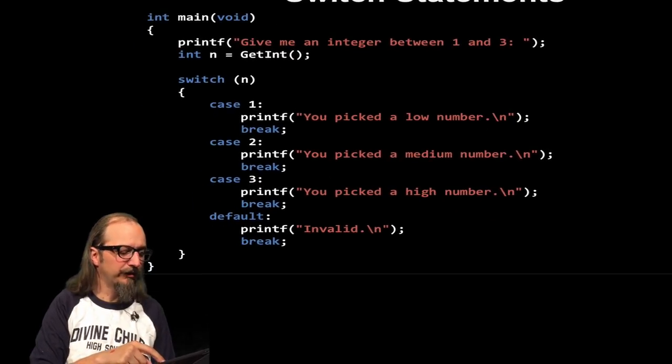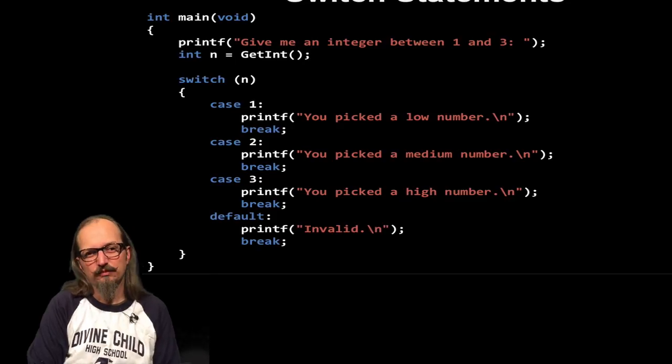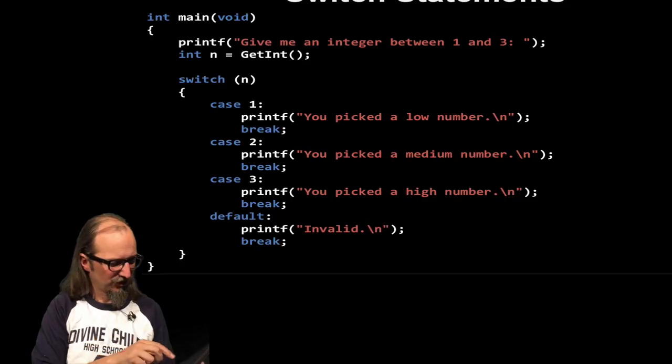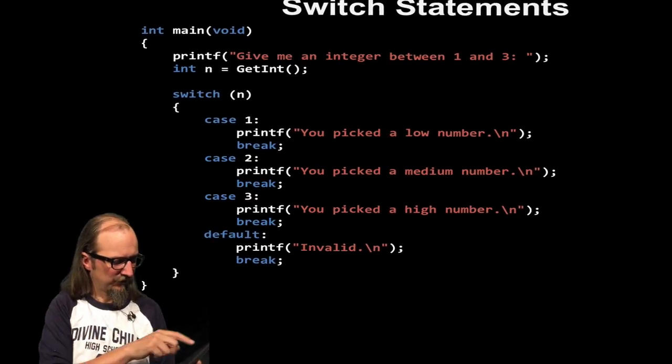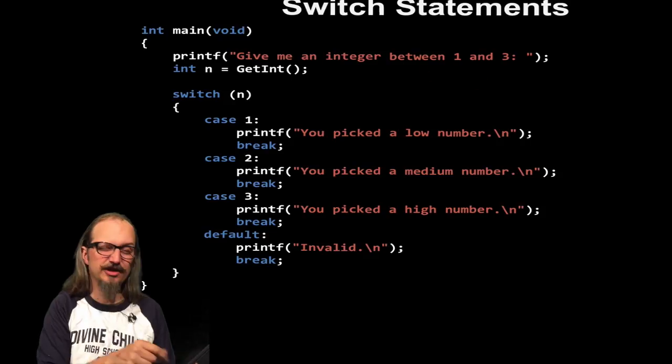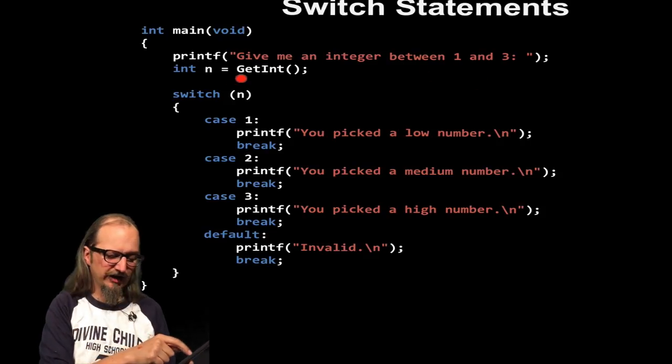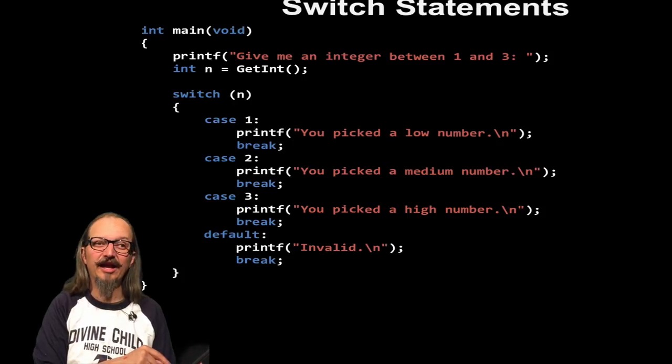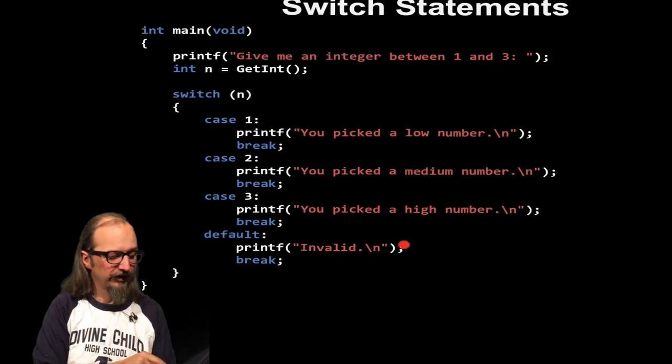Another one we can do, particularly when we've got a long stretch of basically ifs and else ifs, is we can do something called switch case. And what this does is this looks at one thing, one variable that might have multiple states. So in this case, it's giving me an integer between one and three. So one, two, three. And it says, switch N means, okay, we're going to plug N in here. And we're going to say, if N is one, do this. If N is two, do this. And if N is three, do this. And if we put something else in, so default is N wasn't one, two, or three, we'll do this instead.